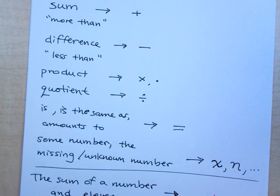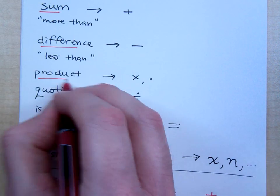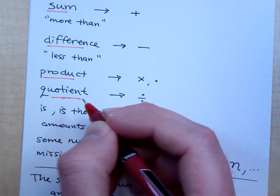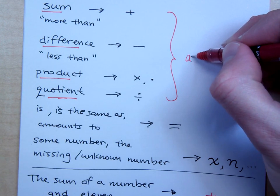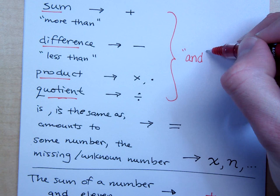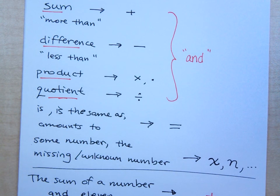Up above, when I've got these main operators here, when I talk about sum, difference, product, quotient, you will also be looking for the word and. And tells you where that operator symbol actually goes among all the words.